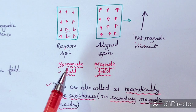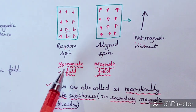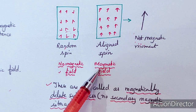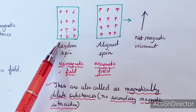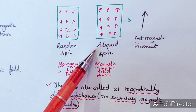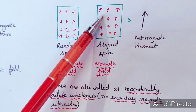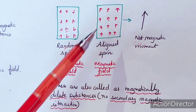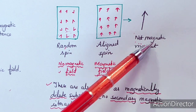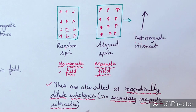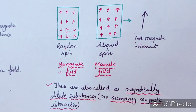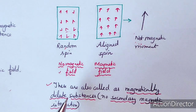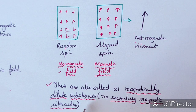Paramagnetic materials show paramagnetism in the presence of a magnetic field. If we remove the magnetic field, the spins become random again. These are also called magnetically dilute substances because no secondary magnetic interaction is present.